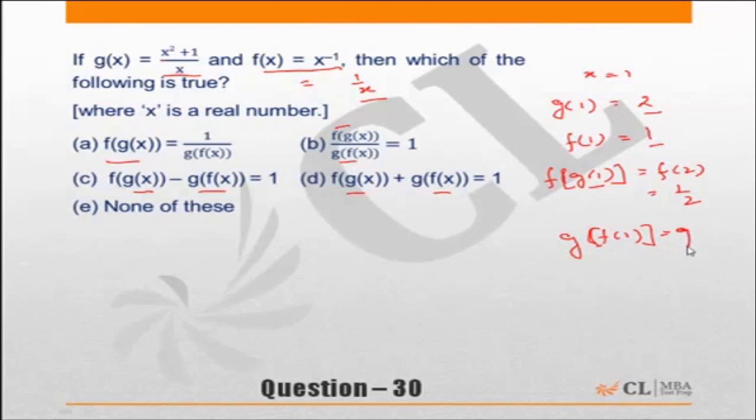And g of f(1)—f(1) is equal to 1, so g of f(1) is nothing but g of 1, which is equal to again 1 plus 1, 2 by 1, which is equal to 2.